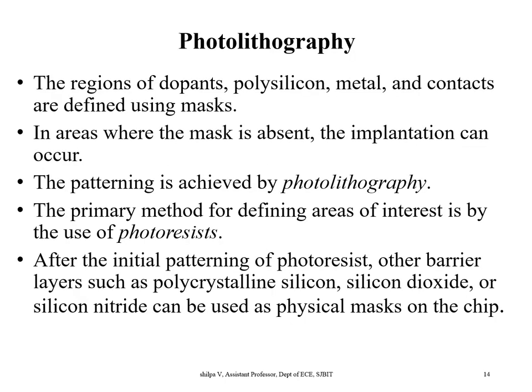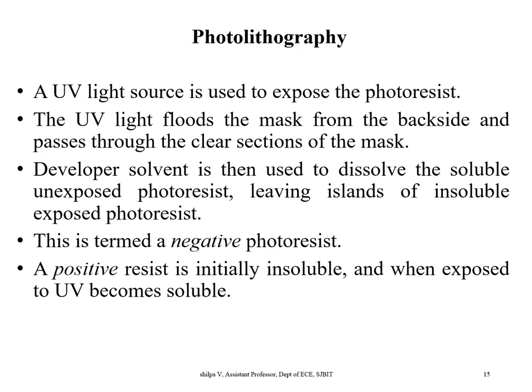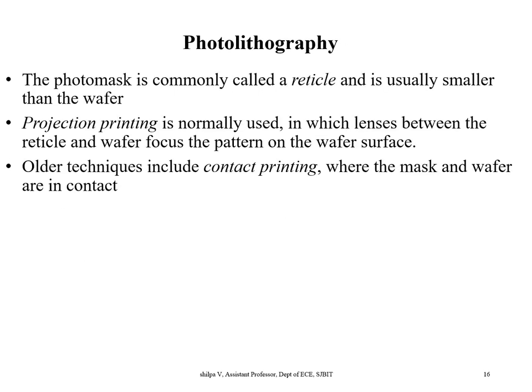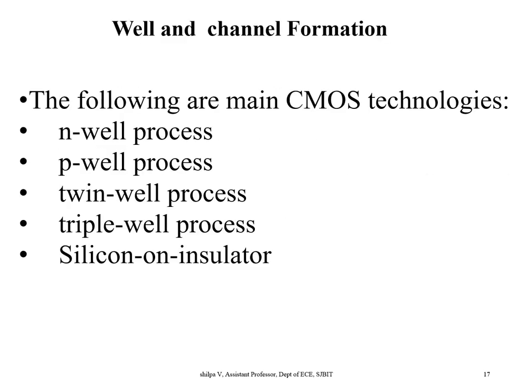CMOS technology uses photolithography. The regions of dopants, polysilicon, metal, and contacts are defined by masks. Where the mask is absent, implantation can occur. Patterning is called photolithography. The primary method for defining areas of interest is by photoresist.